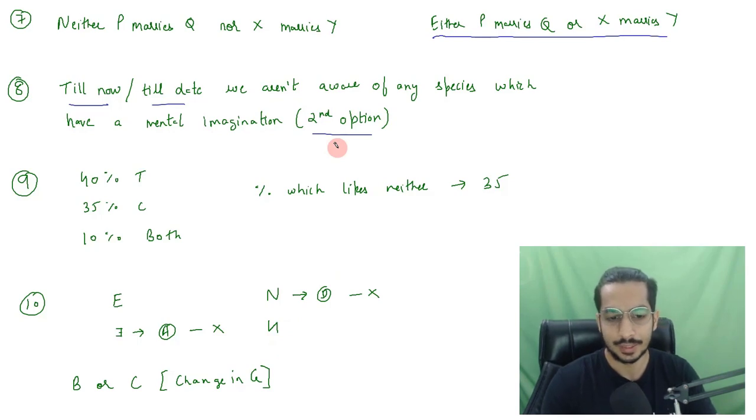Then, there was a question based on the Venn diagram that 40% drink tea and 35% drink coffee and 10% drink both tea and coffee. What percentage drinks neither of them, neither tea nor coffee. For that, the correct answer was 35%.